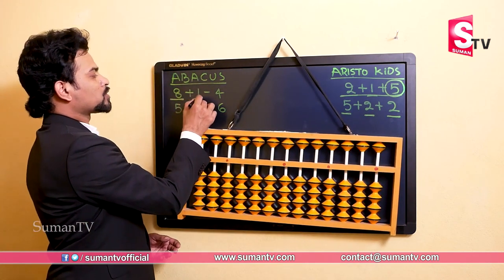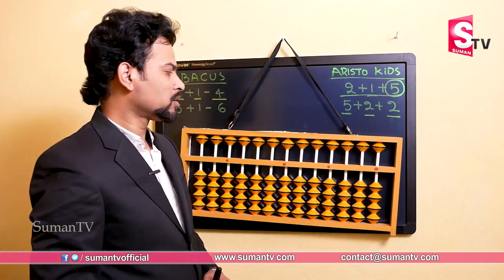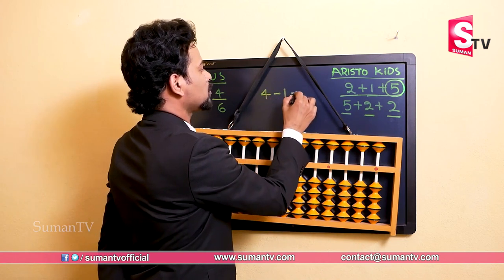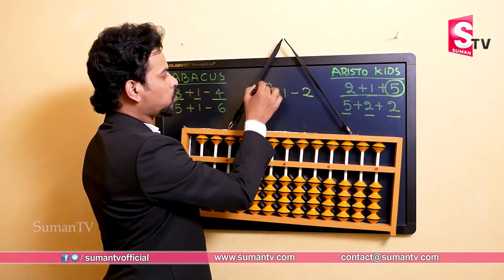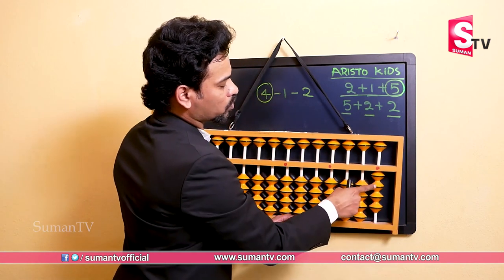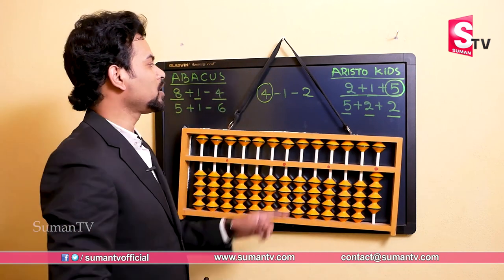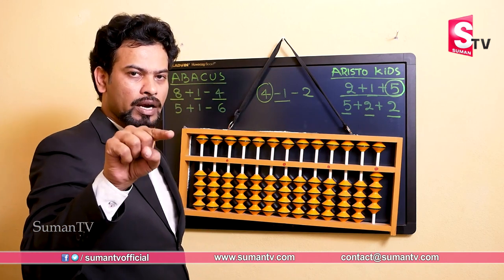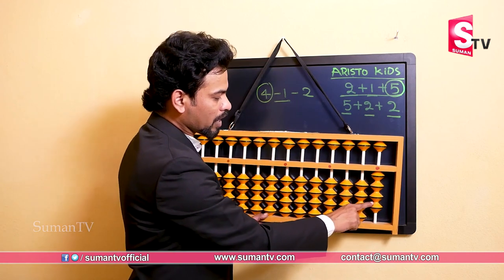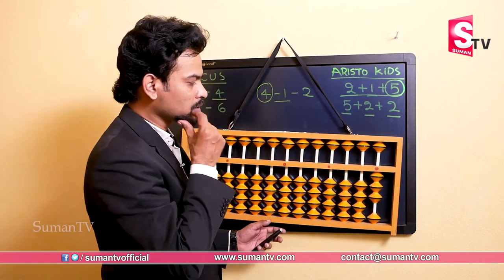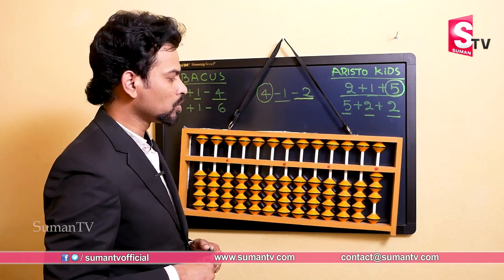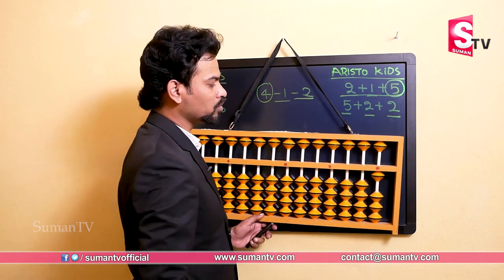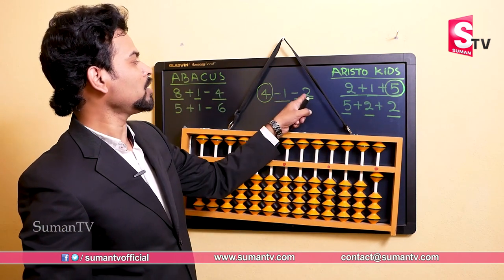Let's take four minus one minus two. First take four: one, two, three, four beads up — one plus one two, plus one three, plus one four. From four we subtract one using the index finger to push one bead down — answer is three. Now again subtract two: two bits down, one and two. The final answer is one. Four minus one is three, three minus two is one.